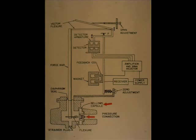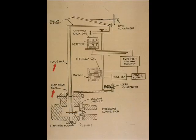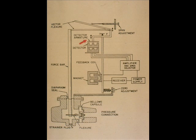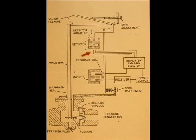The pressure exerts a force on the capsule, causing the force bar to pivot about the diaphragm seal. This causes a movement of the detector armature, which causes a change in current flow in the detector secondary winding.